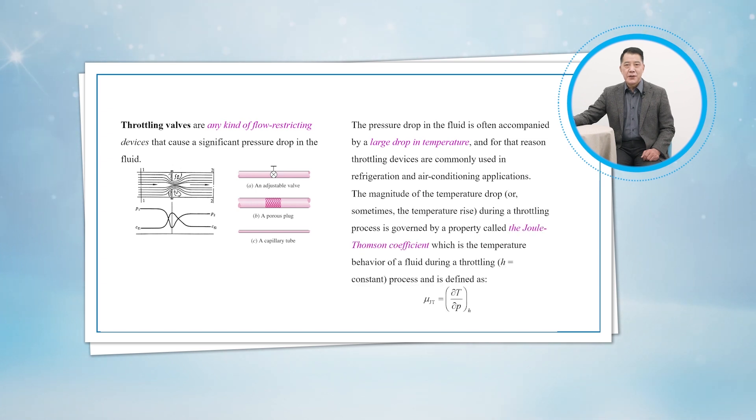The magnitude of the temperature drop during a throttling process is governed by a property called the Joule-Thomson coefficient, which represents the temperature behavior of a fluid during a throttling process.